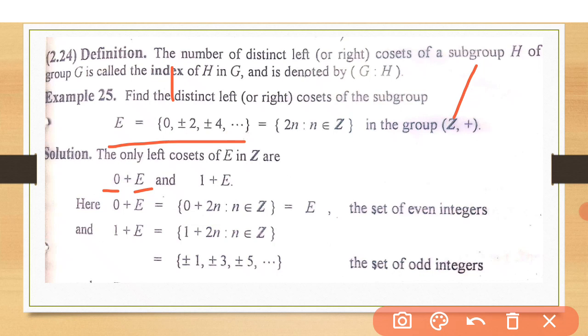When we add 0 to 0, it gives us 0. We add 0 to plus minus 2, it gives us plus minus 2. When we add 0 to plus minus 4, we are adding. So it gives us the E subgroup itself by adding the identity element. We know that by adding 0, the identity, there will be no change in the element.